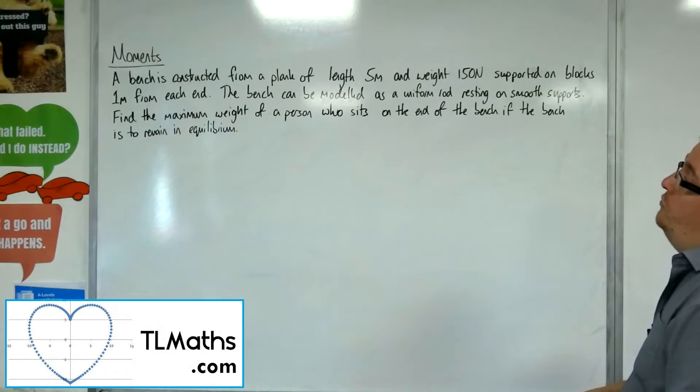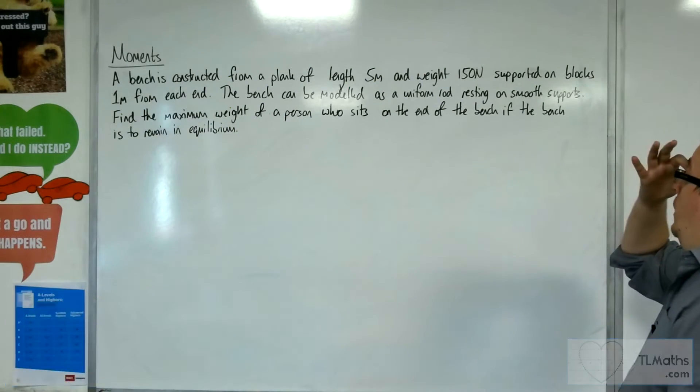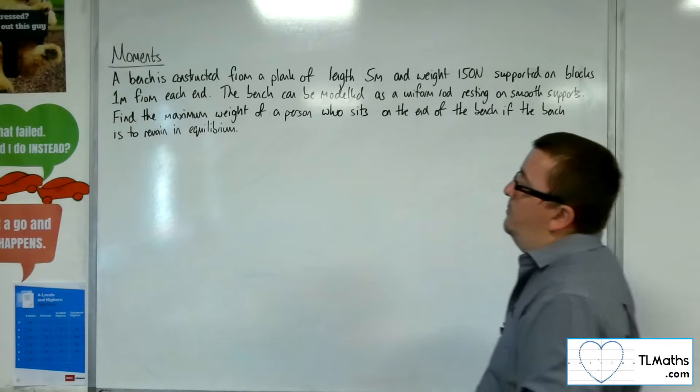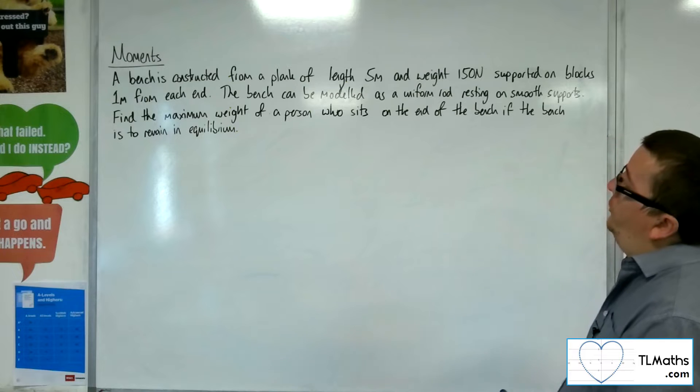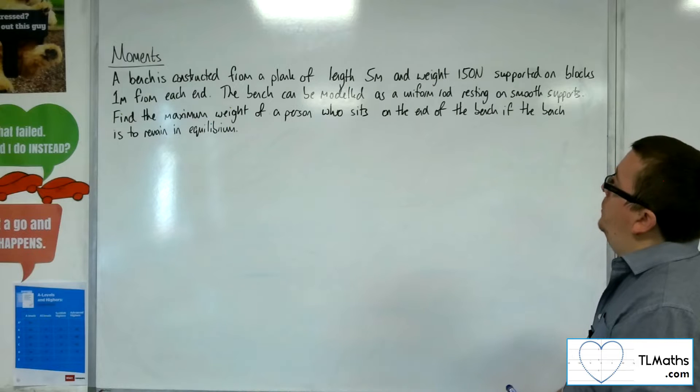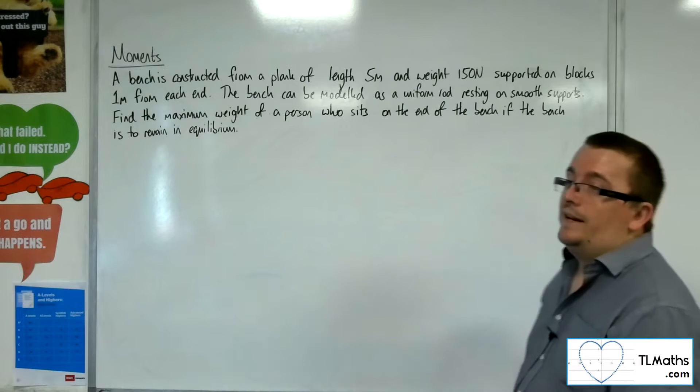In this video, a bench is constructed from a plank of length 5 meters and weight 150 newtons, supported on blocks 1 meter from each end. The bench can be modeled as a uniform rod resting on smooth supports. Find the maximum weight of a person who sits on the end of the bench if the bench is to remain in equilibrium.